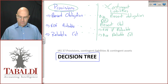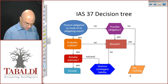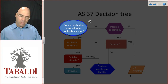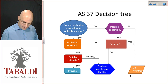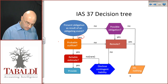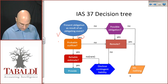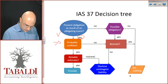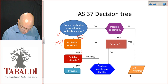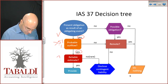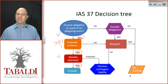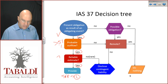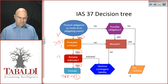Basically, if we don't meet the recognition criteria of a provision, we start thinking about contingent liabilities. So let's do a decision tree. The first question is whether there is a present obligation. If yes, we ask: is the future outflow probable — meaning greater than 51%? If yes, we ask: can a reliable estimate of those future outflows be made? If yes, which is the majority of scenarios, we recognize a fully fledged liability called a provision in the statement of financial position.